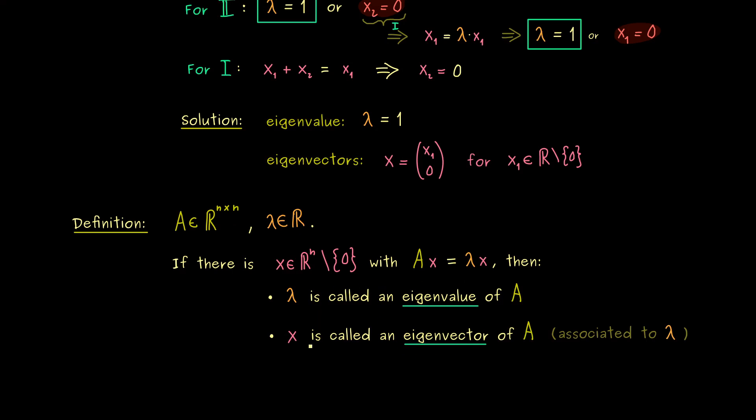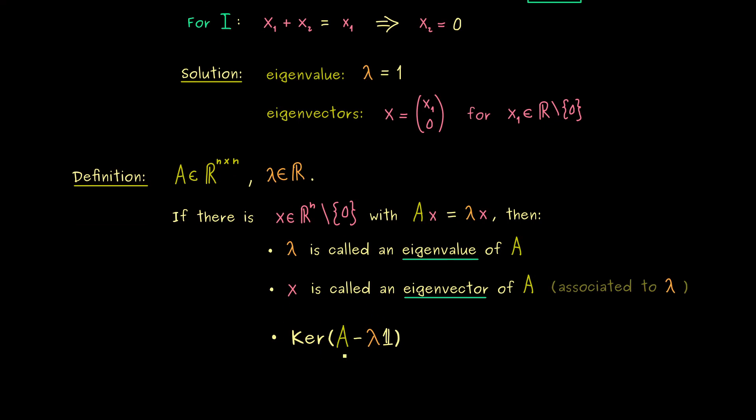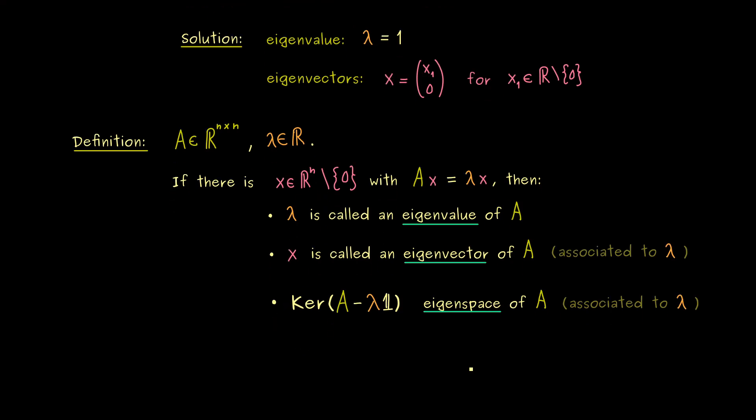Moreover, we have seen before that all eigenvectors together form a kernel. Namely, it's the kernel of A minus λ times the identity matrix. Therefore, this subspace also gets a special name, it's called the eigenspace of A. Or more precisely, we would say it's the eigenspace of A associated to the eigenvalue λ. However, now please note, in this eigenspace the zero vector now is included. We do that because then we just deal with an ordinary subspace here.